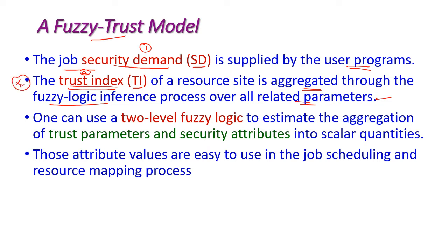We can use two-level fuzzy logic to estimate the aggregation of trust parameters as well as security attributes. Those values should be converted into scalar quantities, and those attribute values are easy to use in the job scheduling and resource mapping process. So computing two-level fuzzy logic is very important for the foresee trust model.